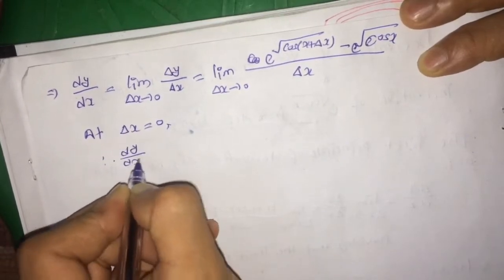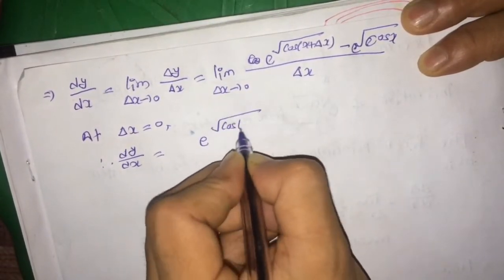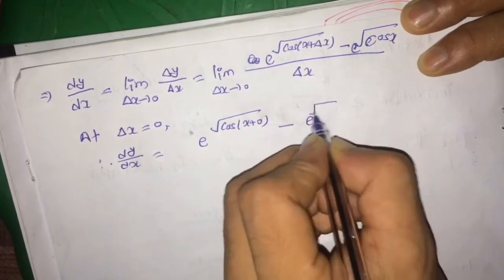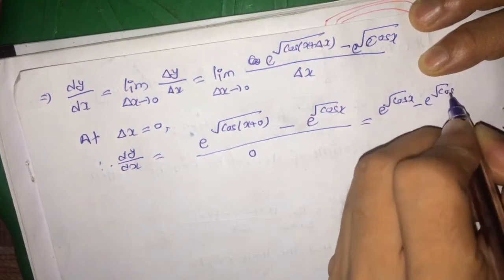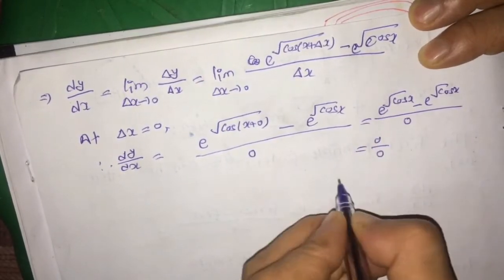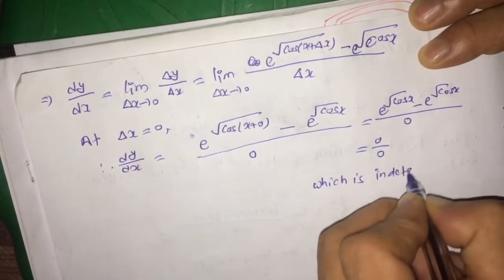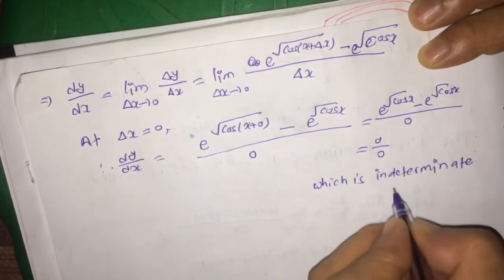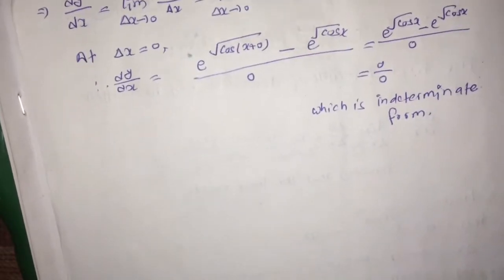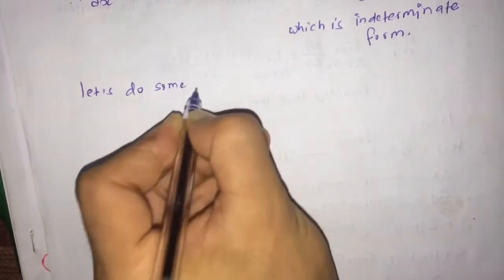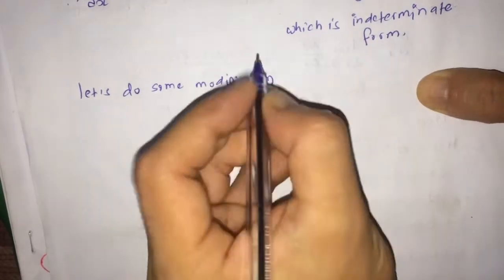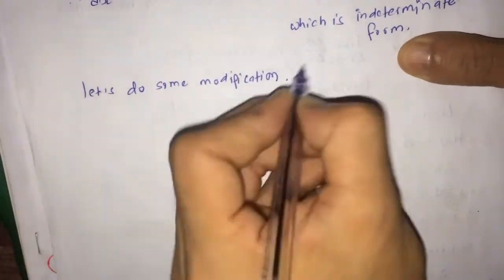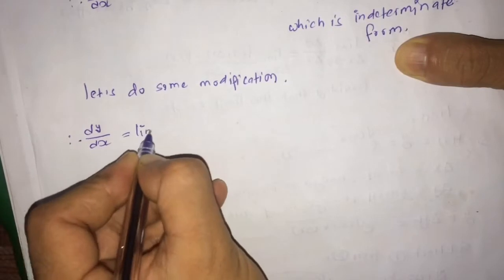If you put δx equal to 0 directly in the limit, then you get dy/dx equal to exponential root under cos(x + 0) minus exponential root under cos x, whole divided by 0. That gives you 0 divided by 0, which is an indeterminate form. In this case you cannot find the derivative of the given function directly using this concept of limit, so we need to do some modification.